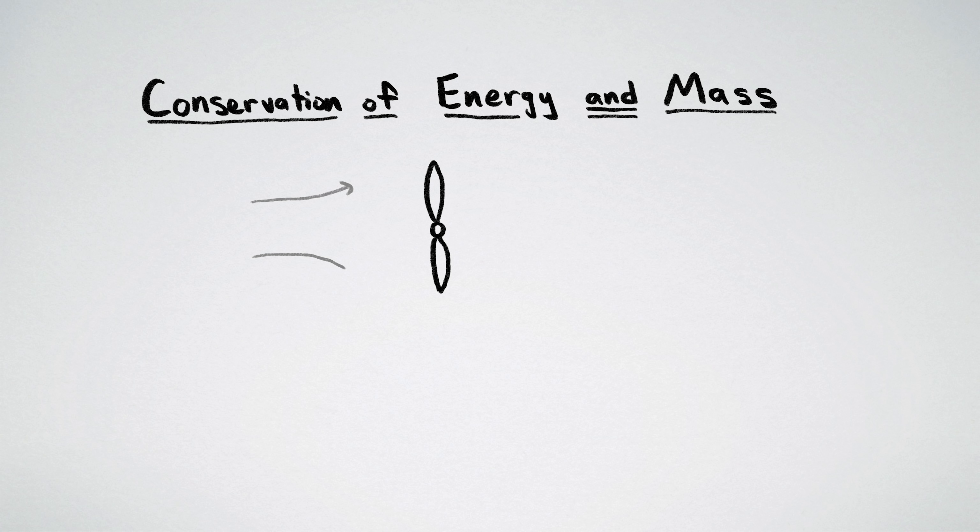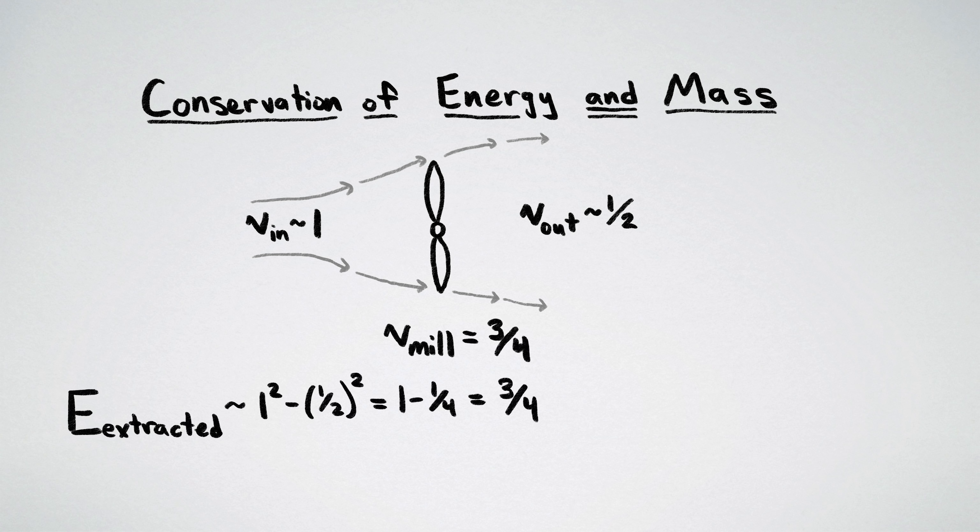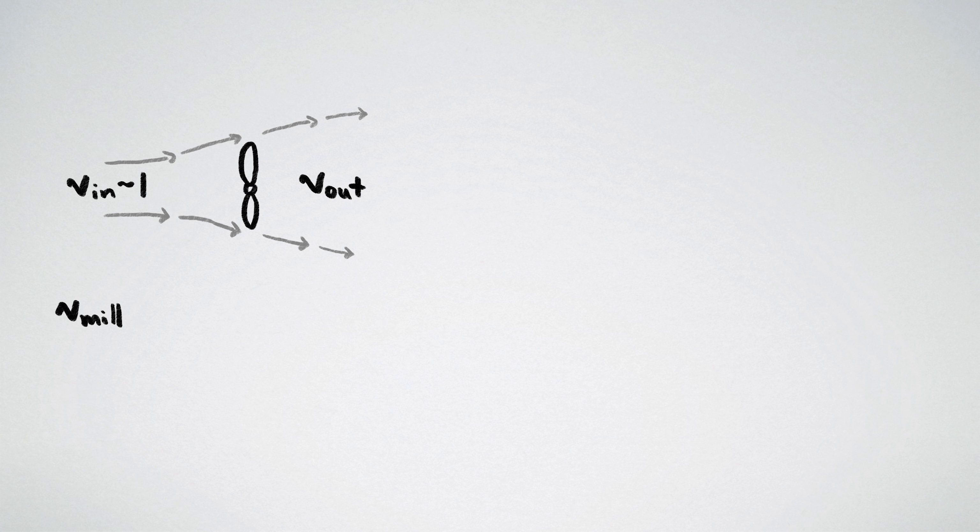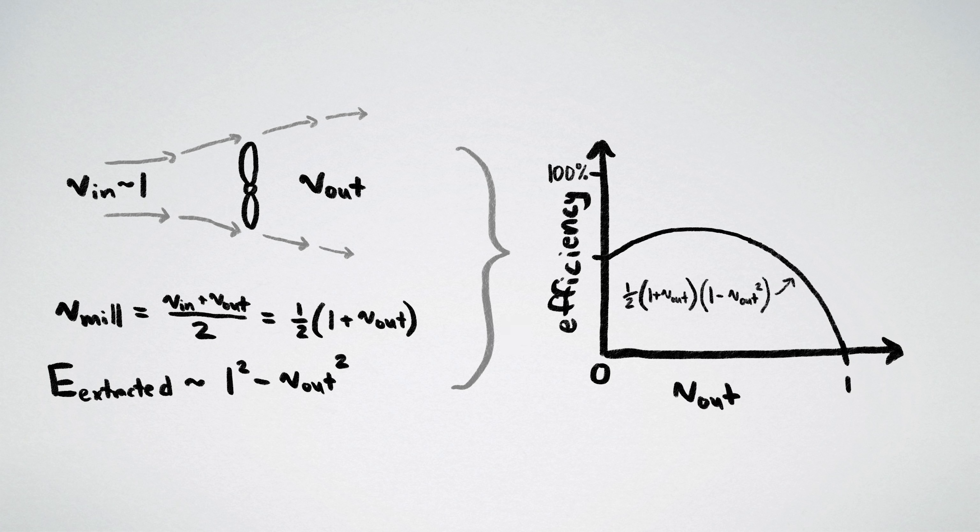Combining these two facts means that a windmill that slows the wind to half its initial speed allows three-fourths as much wind to pass, and extracts three-fourths of the energy from that wind, for a total efficiency of three-fourths times three-fourths, or 56.25%. Doing the same math for other possible wind speed reductions,